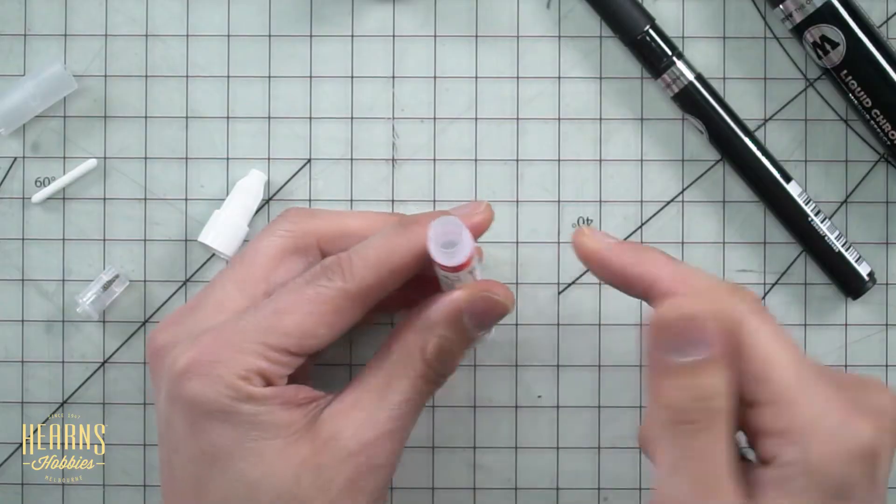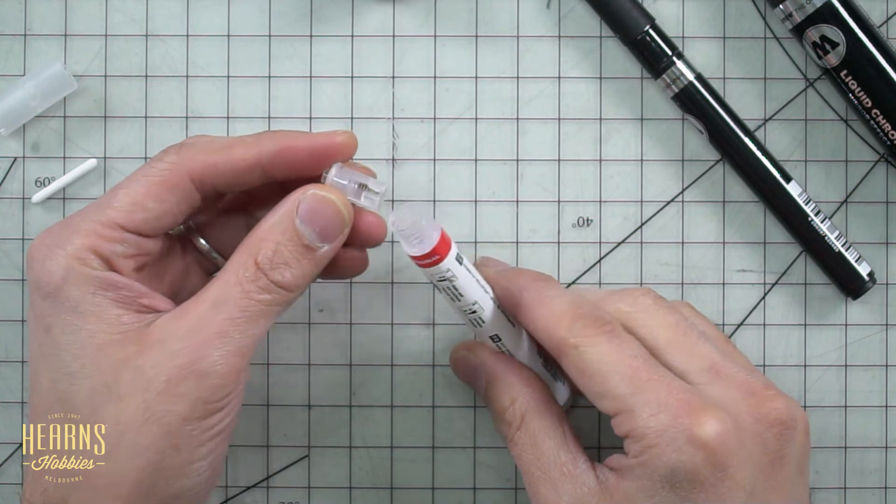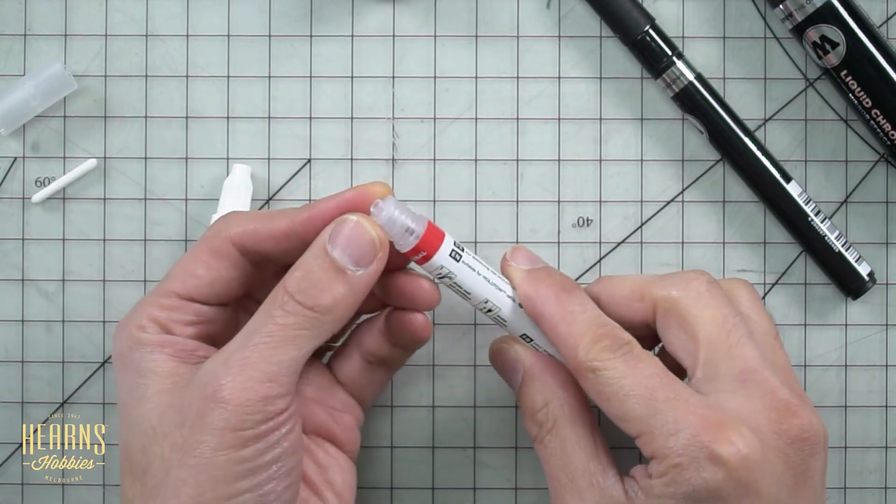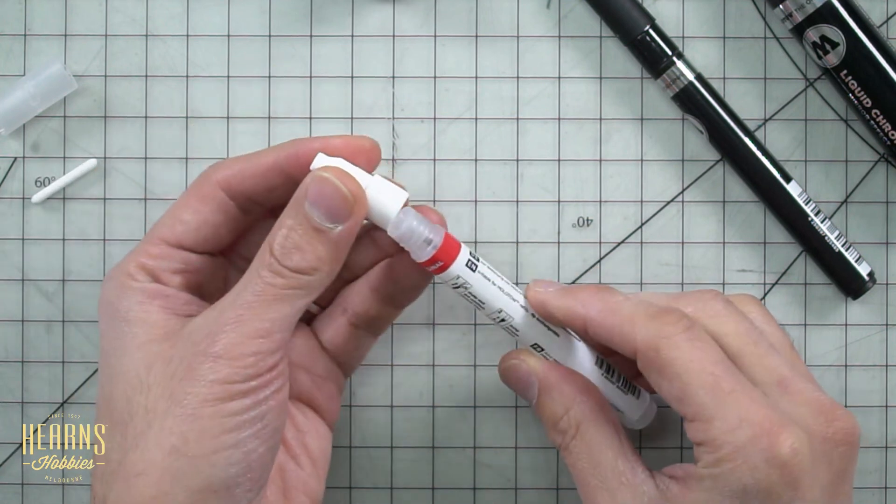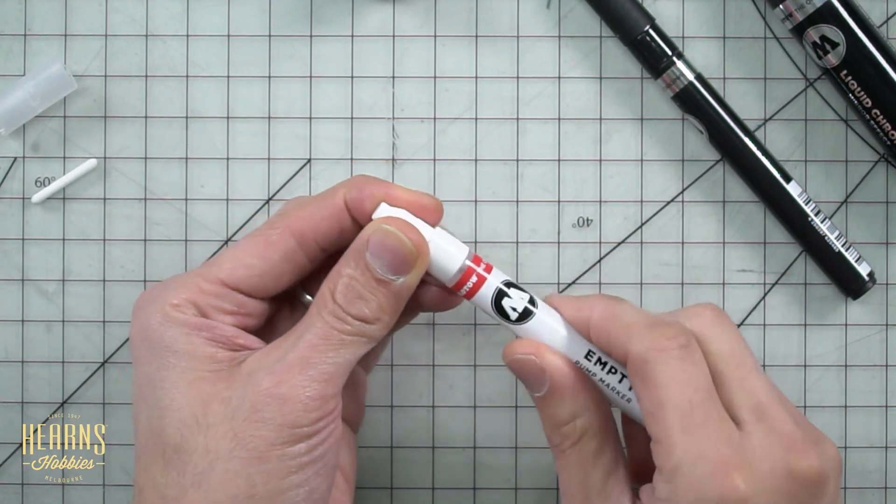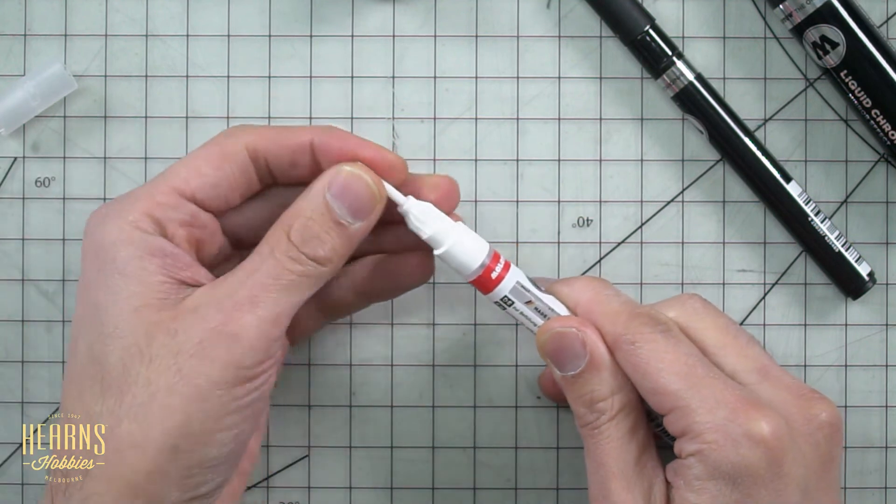Once I've refilled it, you've got the ball bearing in there. Make sure the ball bearing is back in there. It's just a matter of getting the end cap and pressing it back like so. Screw on the end. Make sure that's nice and tight, like so.